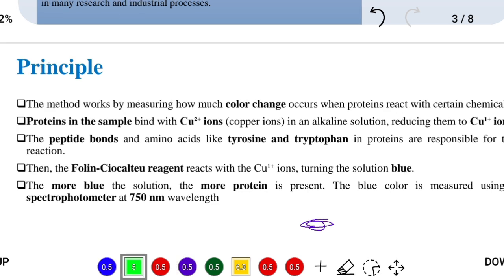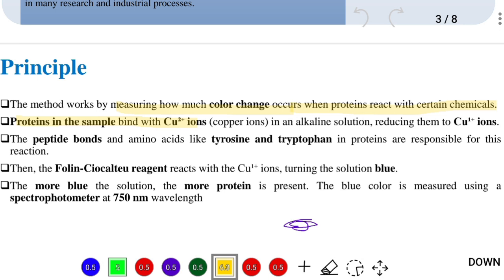The method works by measuring how much color change occurs when proteins react with certain chemicals. When you perform this method, you add some chemicals to the sample. Because of those chemicals, the color changes and you will find dark blue or blue color. Proteins in the sample bind with Cu²⁺ ions in an alkaline solution, reducing them to Cu⁺ ions.